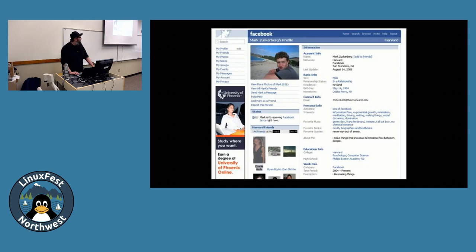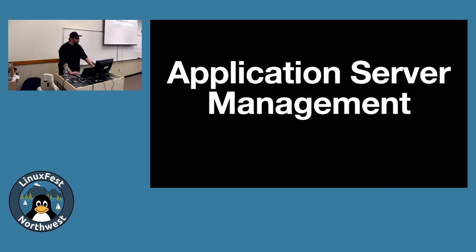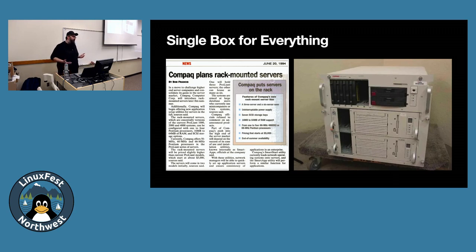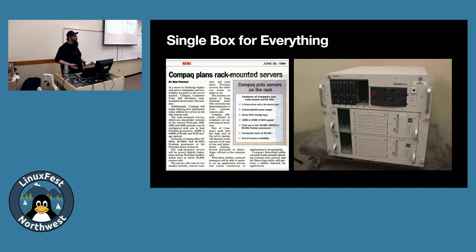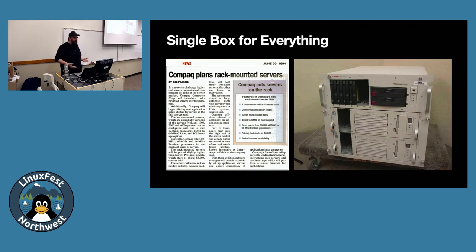Let's talk about how we were deploying applications in the past. In the early days of the internet—early '90s—we didn't know if this was a fad or not. We were just starting to have things like rack-mounted servers. This is an ad for an early Compaq one, about $5,000 for this kind of newfangled server. You would want to put everything on this box because the web was new and you didn't know if your investment was going to pay off. So if you had a web application, you'd put it on that. If you had an email server, you'd put it on that. Everything on this single box—that's how things went.